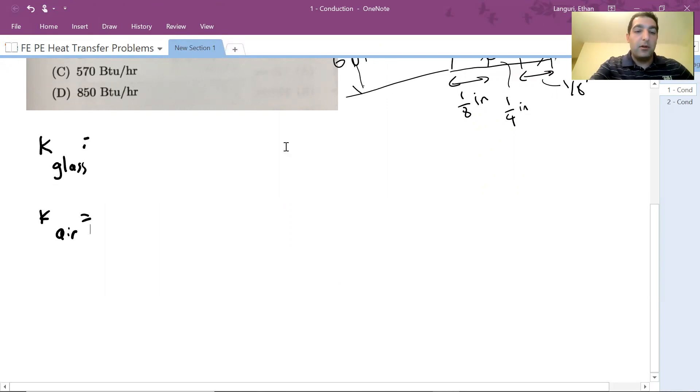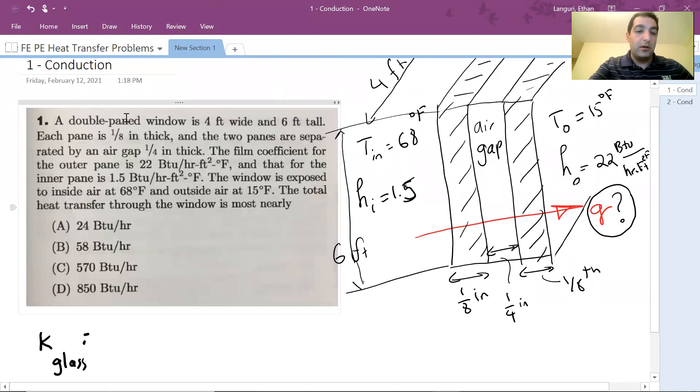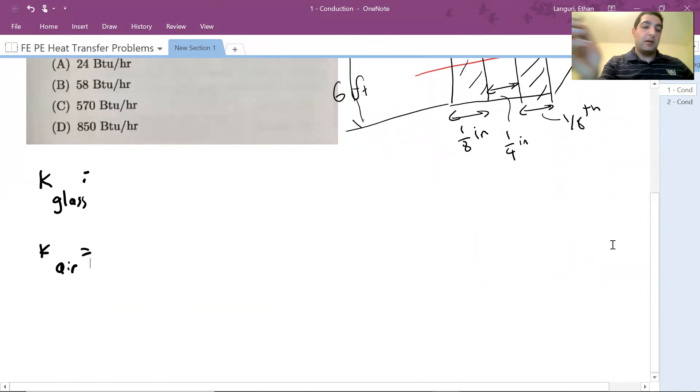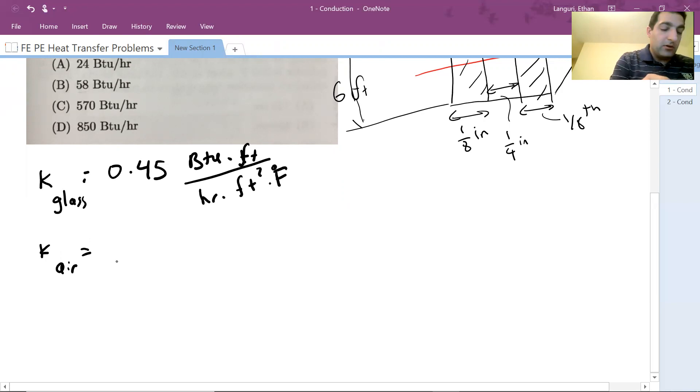Of course, it's not given in the problem, but the PE exam is open book, open note, which means that you should have access to the table of thermal properties and be able to quickly find it. Maybe in one of the videos, I'll talk about that. But thermal conductivity of the glass for this problem, you can find it to be 0.45 BTU foot per hour foot squared degree Fahrenheit.